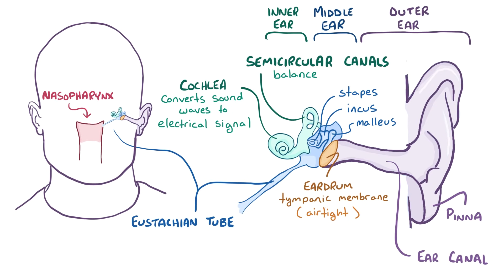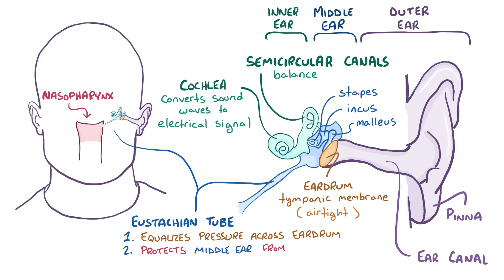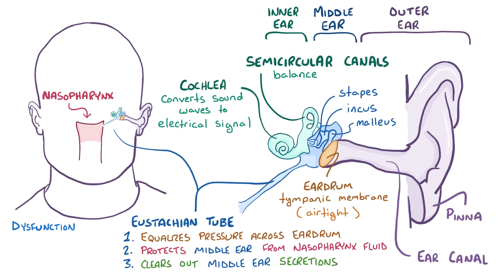This tube has three main functions: equalizing pressure across the tympanic membrane, protecting the middle ear from reflux of fluids going up from the nasopharynx, and clearing out middle ear secretions. Eustachian tube dysfunction describes situations when one or all of these functions aren't happening normally.